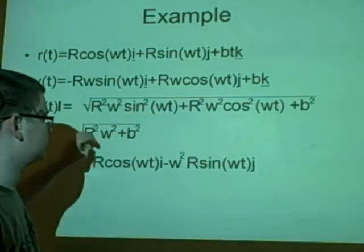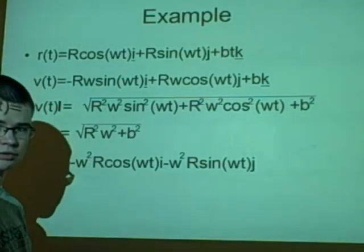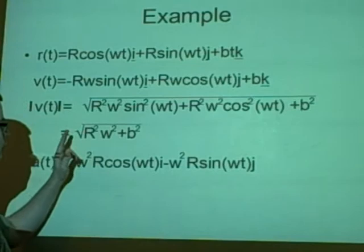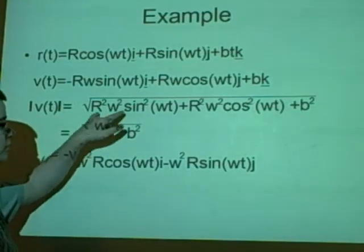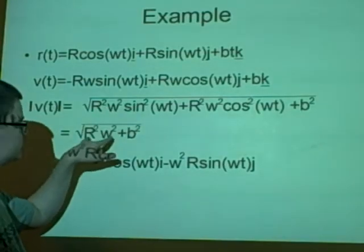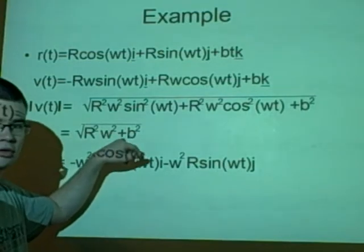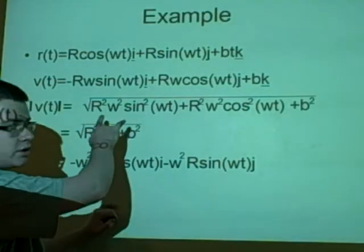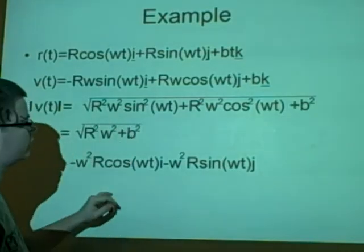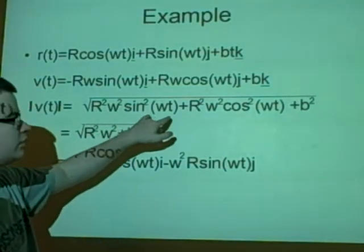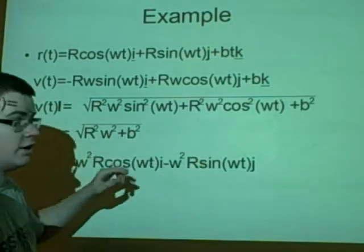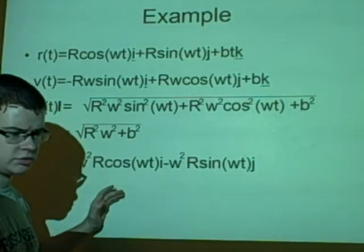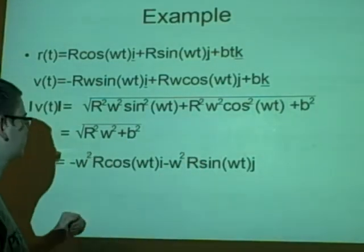To get the speed we find the modulus of it. We square everything and then square root it to make sure there's no negatives. This cancels down to square root of r squared omega squared plus b squared, as you can take out r squared and omega squared as a common factor. You're left with sin squared plus cos squared, and that equals 1.